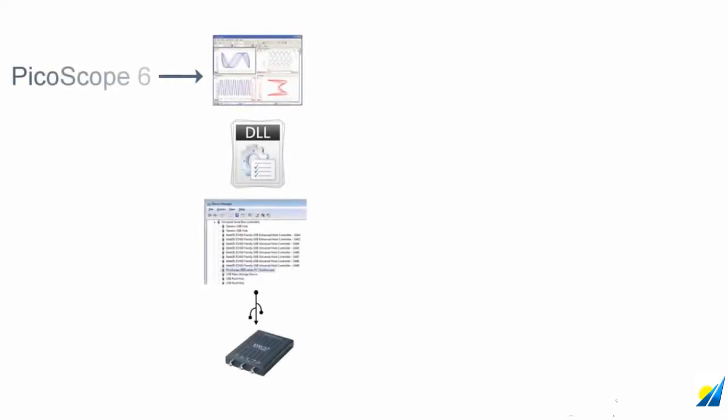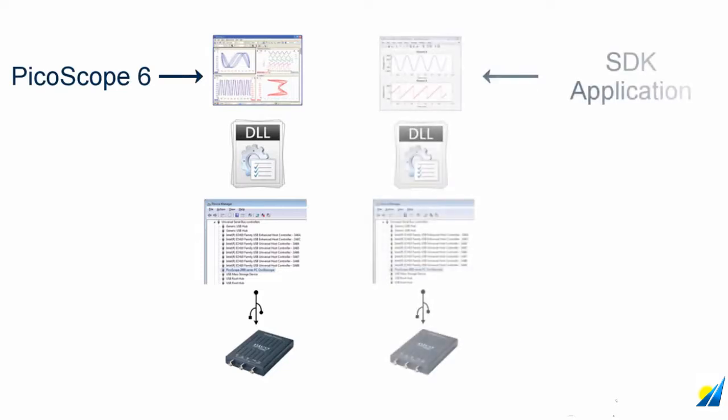So how does the SDK work? We have an application — in this case PicoScope 6 — which communicates with the dynamic link library for the device, which in turn communicates via the USB interface to our product. In the same way, your SDK application will communicate with the dynamic link library and again through the USB kernel drivers to the hardware product.